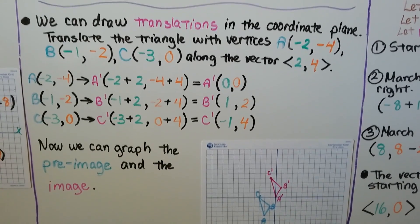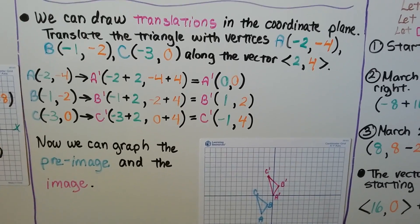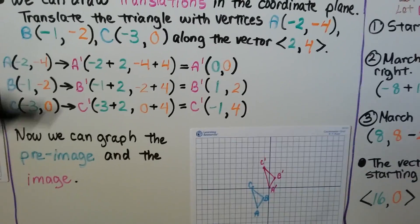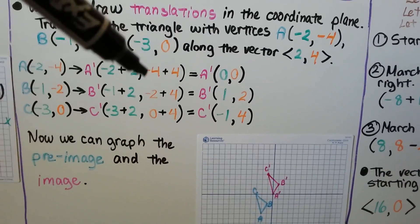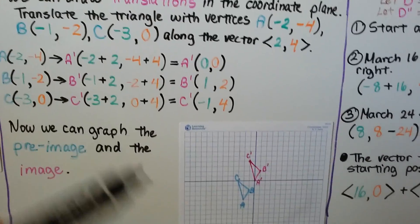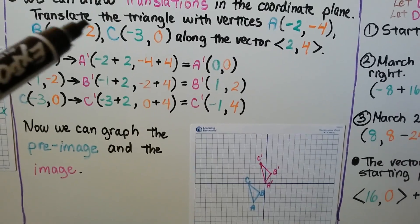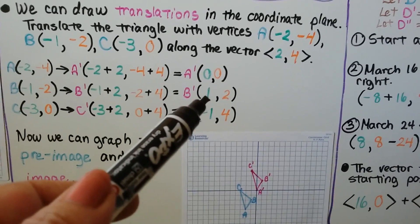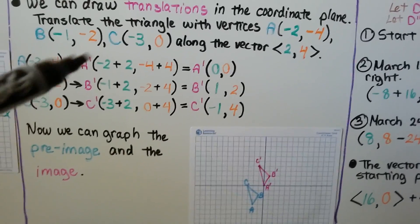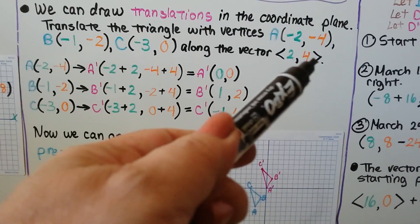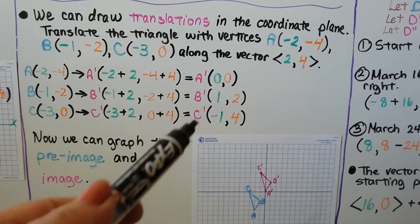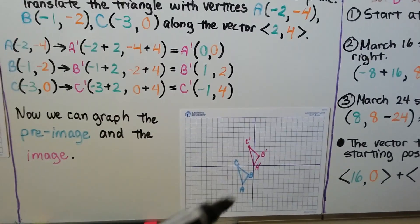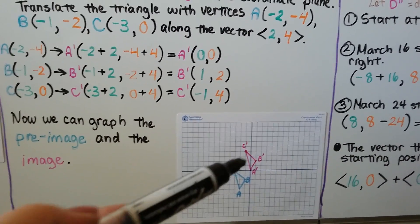We can draw translations in the coordinate plane by translating a triangle with vertices A, B, C along the vector <2, 4>. A is at (-2, -4), so A prime is at (-2+2, -4+4) = (0, 0) — the origin. B is at (-1, -2), so B prime is at (-1+2, -2+4) = (1, 2). C is at (-3, 0), so C prime is at (-3+2, 0+4) = (-1, 4). We can then graph both the pre-image and the image as two triangles — the pre-image translated to the image.